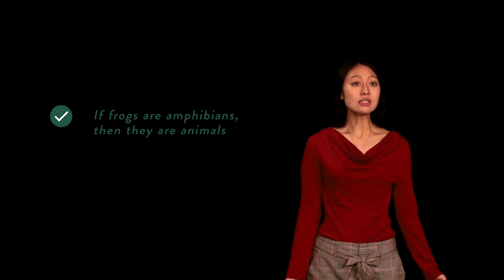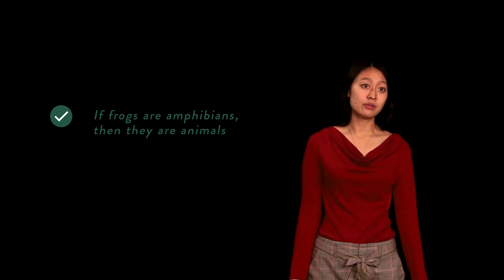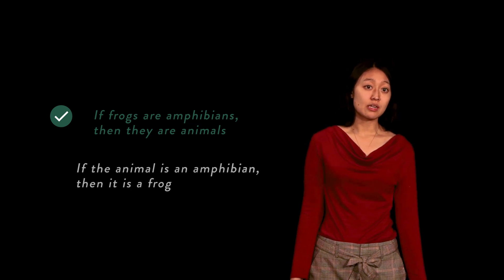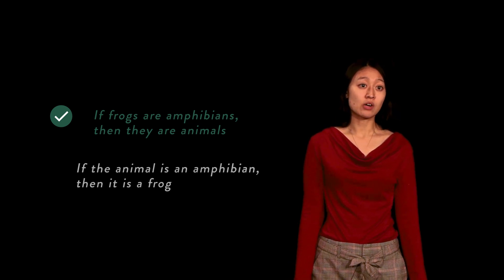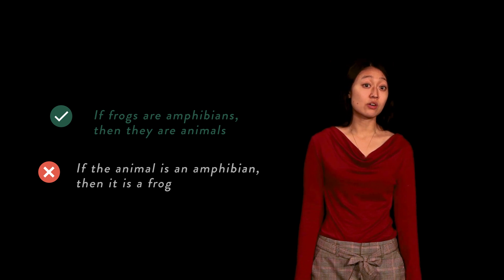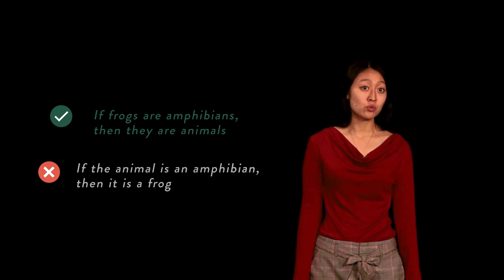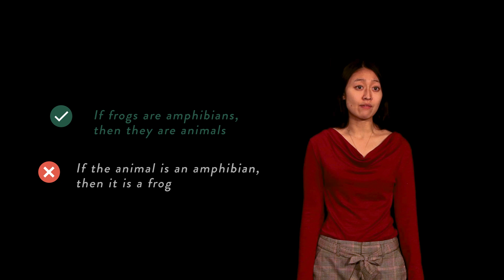Now let's consider an alternative example: if the animal is an amphibian, then it is a frog. This hypothetical is false, as there are amphibians that are not frogs, so the first proposition may be true without the second having to be true.